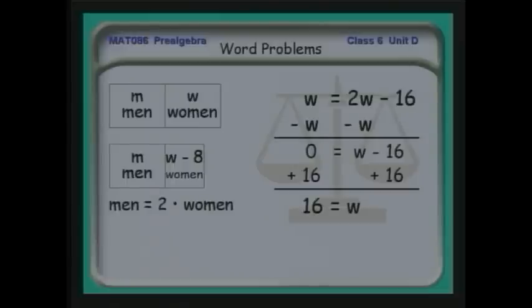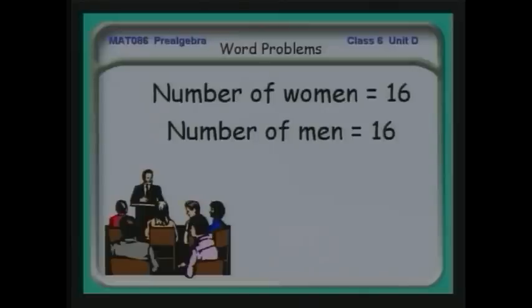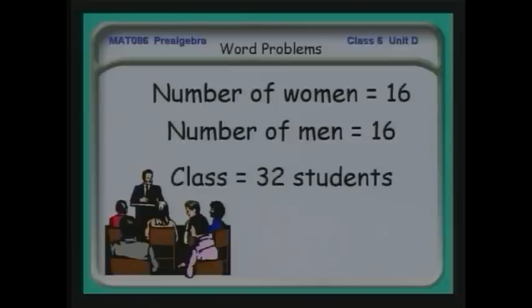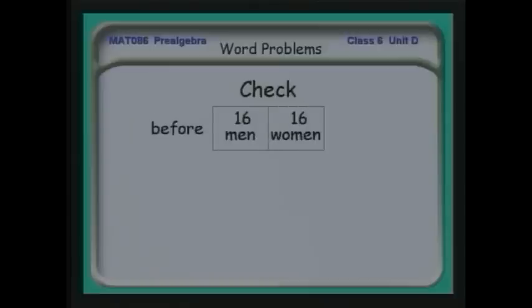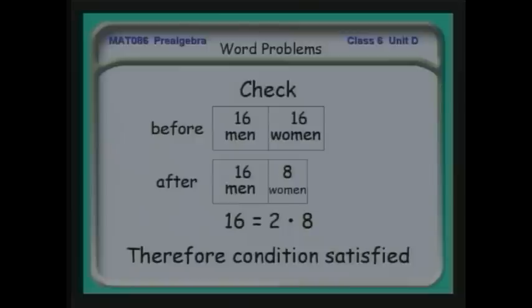The class had sixteen women. The original number of men equaled the number of women, so there were sixteen men and sixteen women — a total of thirty-two students. I can check: before, men and women were equal at sixteen each. After eight women left, eight remained. Is sixteen twice eight? Yes, it is. The equation is satisfied and the conditions are satisfied, so we solved this word problem correctly.